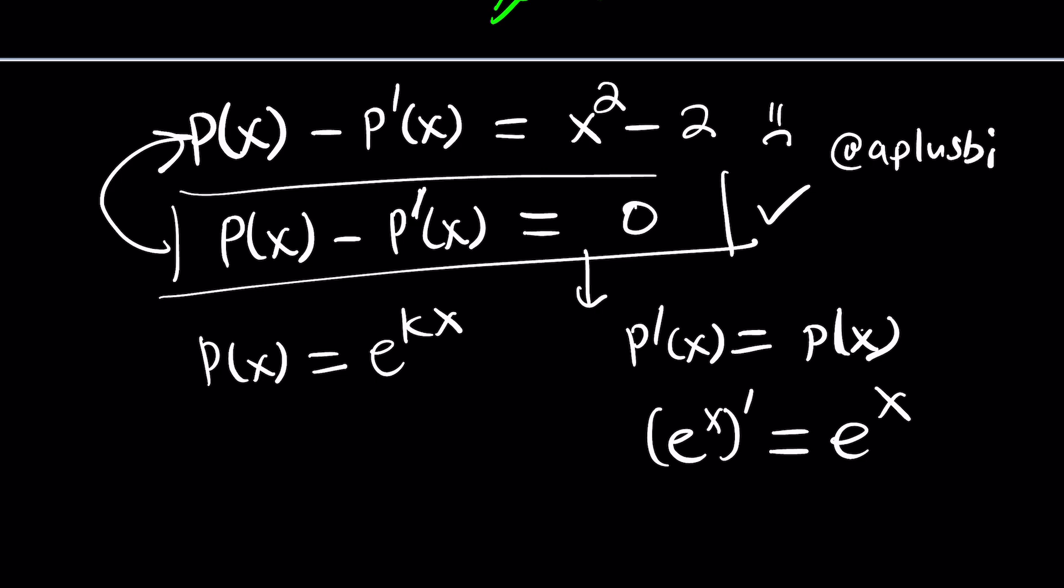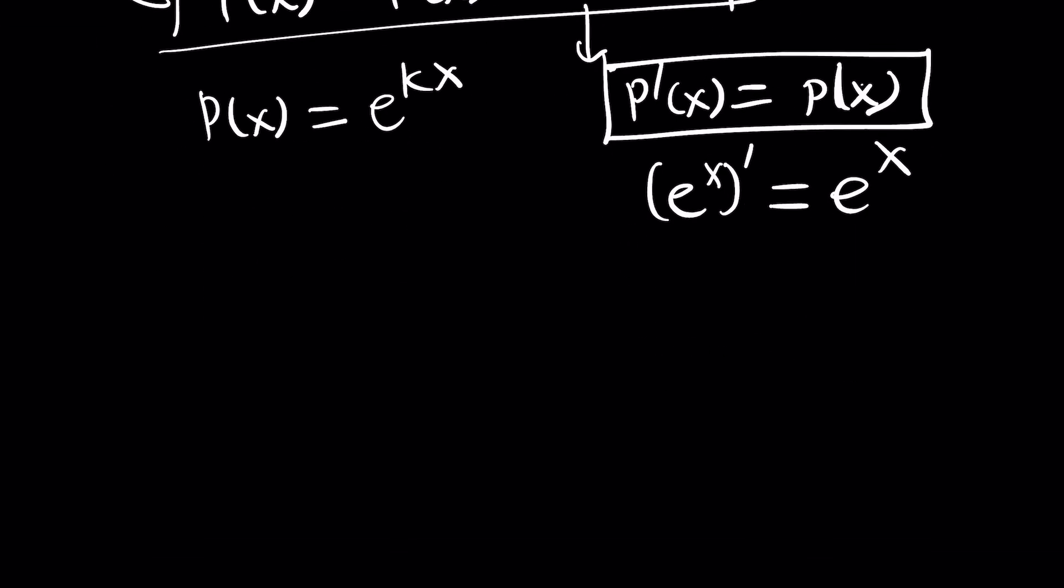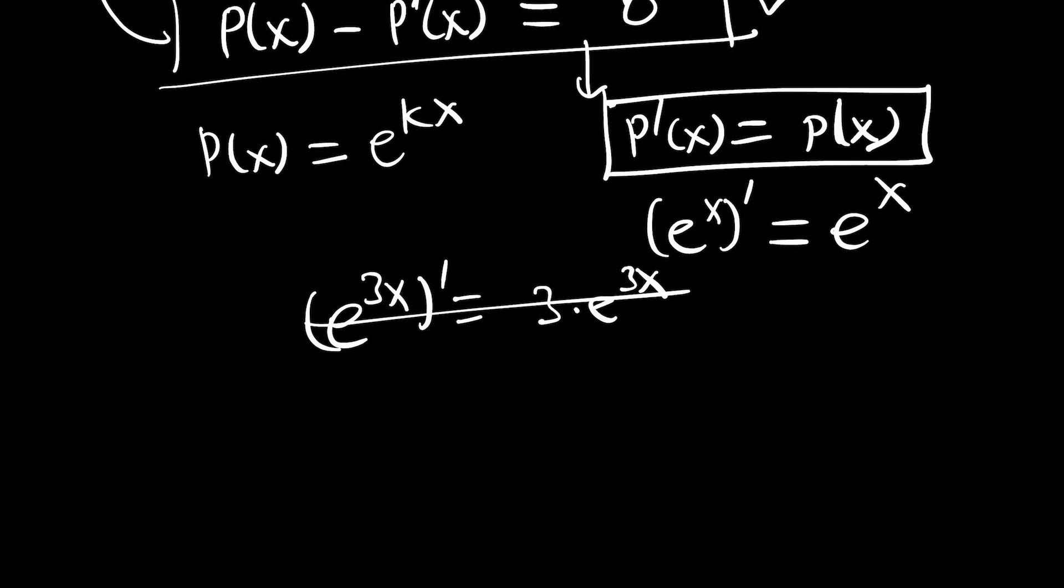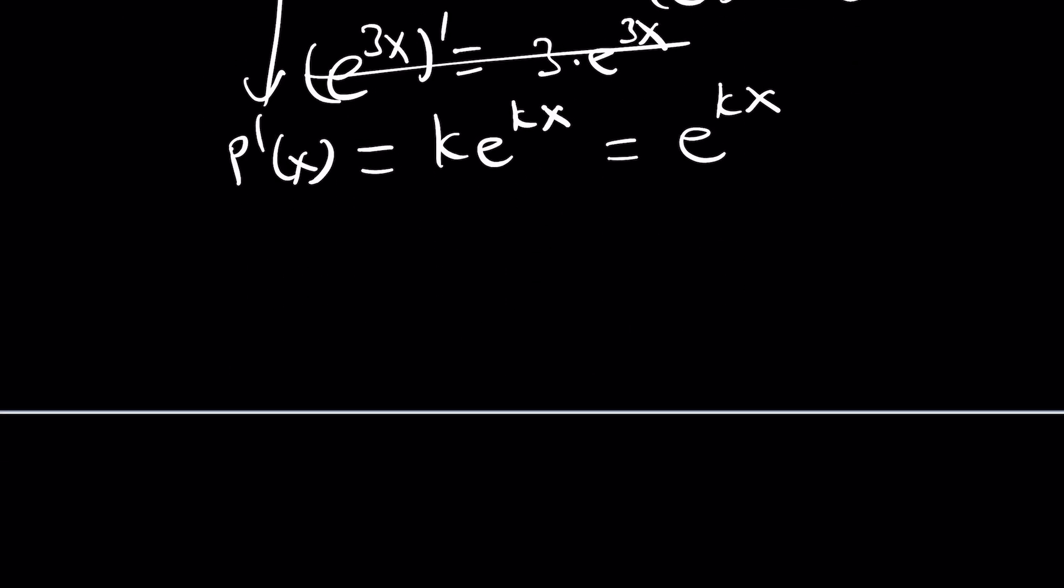The derivative of e to the x is itself. That's a very special function because Euler is amazing. So yes, e to the x will be a solution, but it could also be e to the power something x, like 3x or 2x. Why? Because if you differentiate e to the 3x, you get 3 times e to the 3x. Wait a minute, that's not true. Well, k can be 1. I didn't say k couldn't be 1. And it is 1, because if you differentiate e to the kx, you get k e to the kx. And if you set it equal to e to the kx, you can cancel. k equals 1.